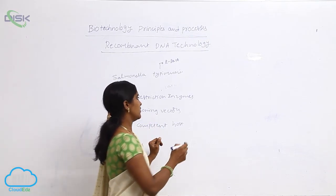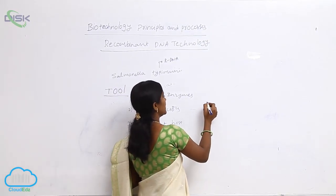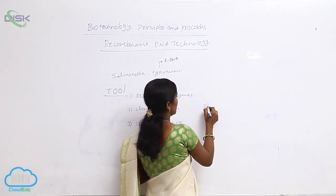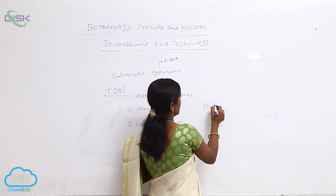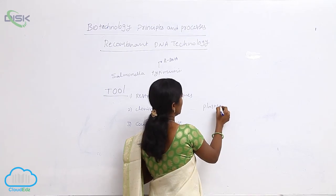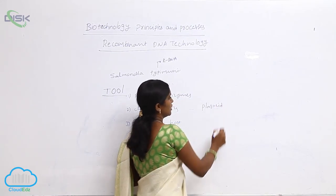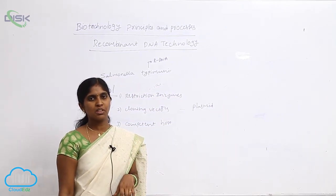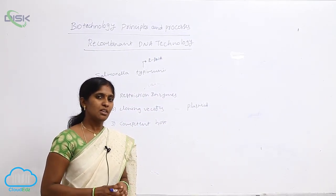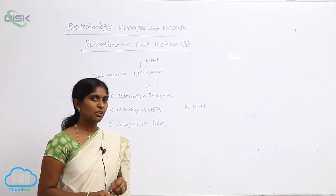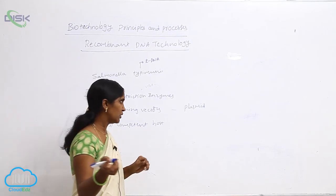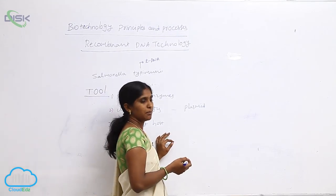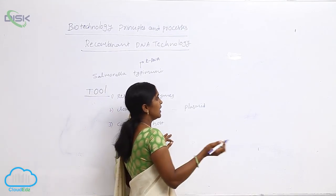We are studying the plasmids. Examples of plasmids are PBR 322, PUC 19, 18, 24, 21, and 22.